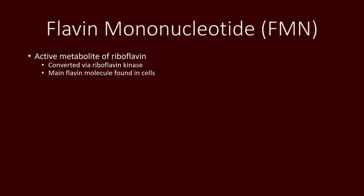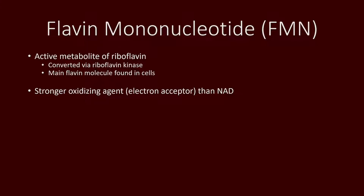FMN is actually the main flavin molecule that we can find in our cells and bodies. Although NAD is by far the more common electron acceptor because it's found in more metabolic pathways, flavin mononucleotide is actually the stronger oxidizing agent, making it a better electron acceptor.